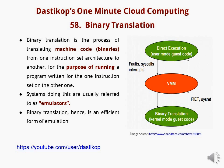In such cases, there are occasions where code needs to be converted, and that is called binary translation. Binary translation is the process of translating machine code binaries from one instruction set architecture to another for the purpose of running a program written for one instruction set on the other.